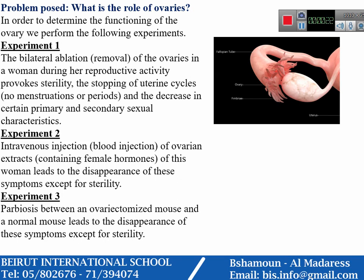In experiment one, the bilateral ablation of the ovaries in a woman during her reproductive activity provokes sterility, the stopping of uterine cycles, and the decrease of certain primary and secondary sexual characteristics.